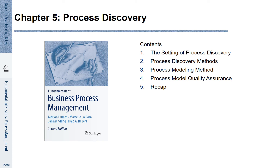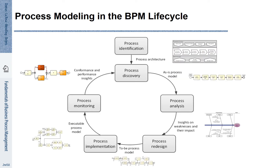Chapter 5: Process Discovery. In this chapter, we first discuss the setting of process discovery, then different methods for process discovery, then one specific method for modeling processes, and finally process model quality assurance. This chapter is related to process discovery in the BPM lifecycle. The aim of process discovery is to produce as-is process models — models that represent how a process currently really works. We present these models as BPMN models.